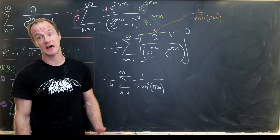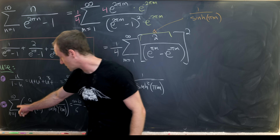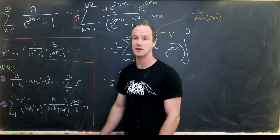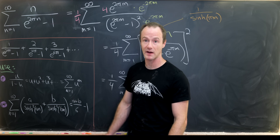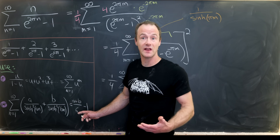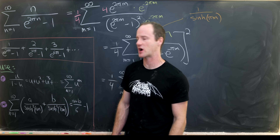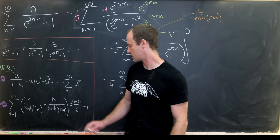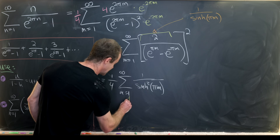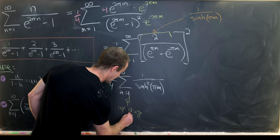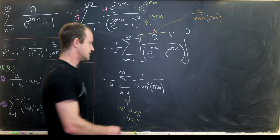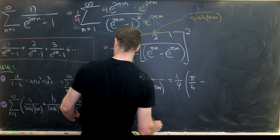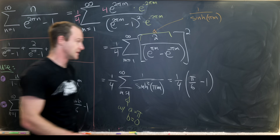We can use this nice identity: the sum as n goes from 1 to infinity of a over sinh squared(an) plus b over sinh squared(bn) equals (a + b)/6 minus 1. We won't derive it here, but it's also something due to Ramanujan. Applying this identity with a equal to π and b equal to 0, we get one quarter times (π/6 minus 1).